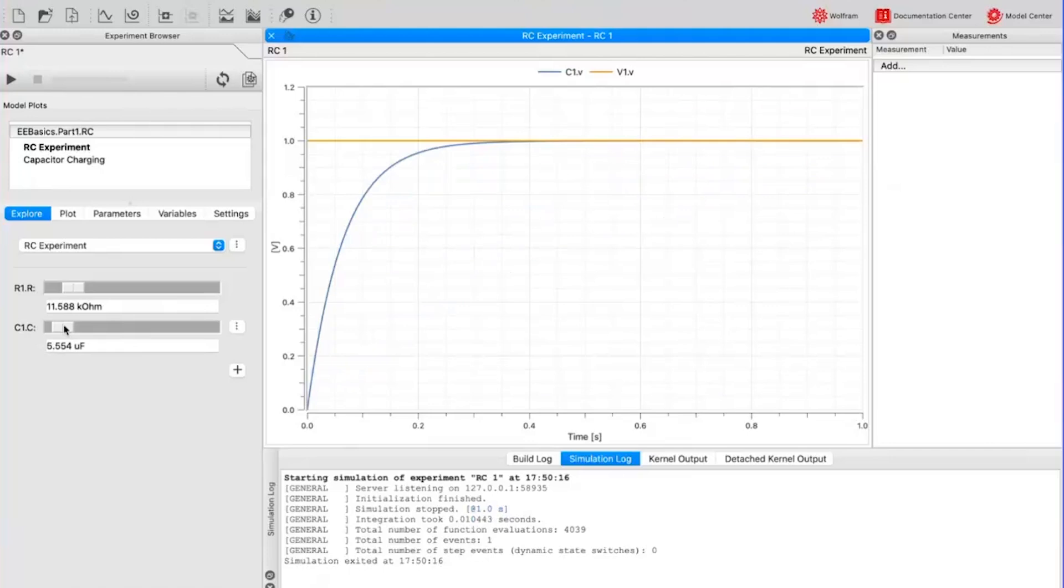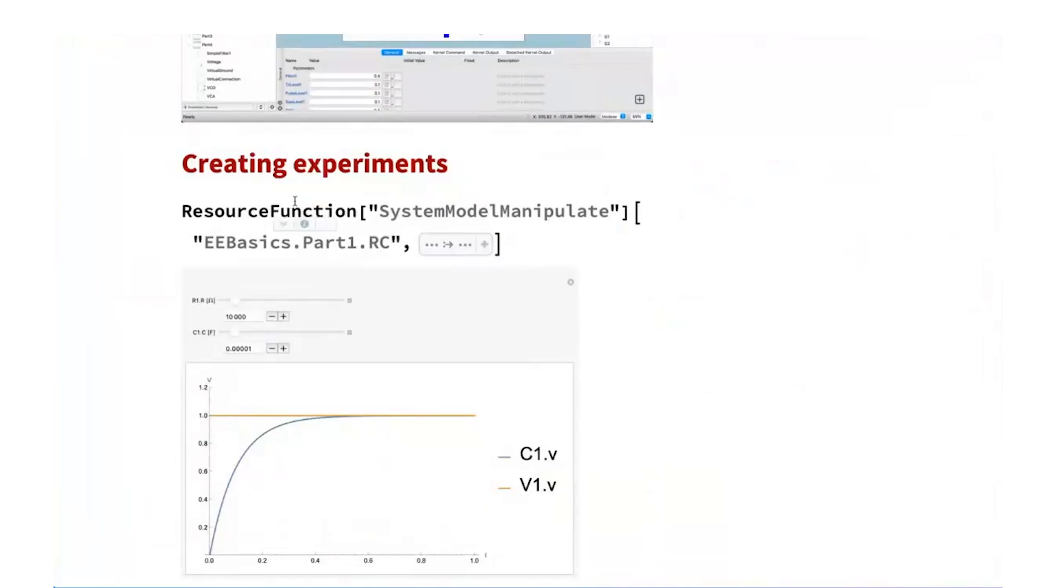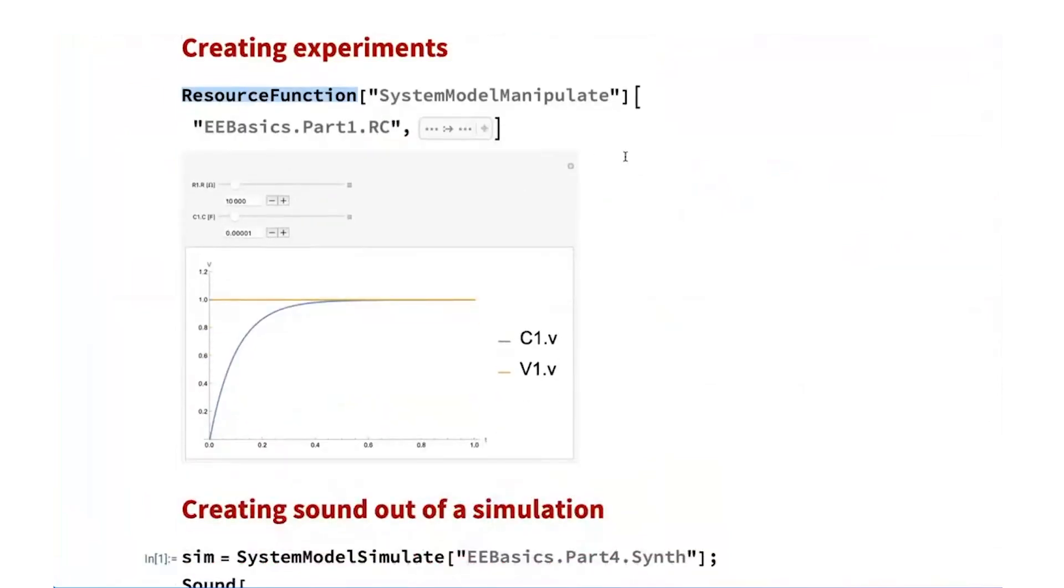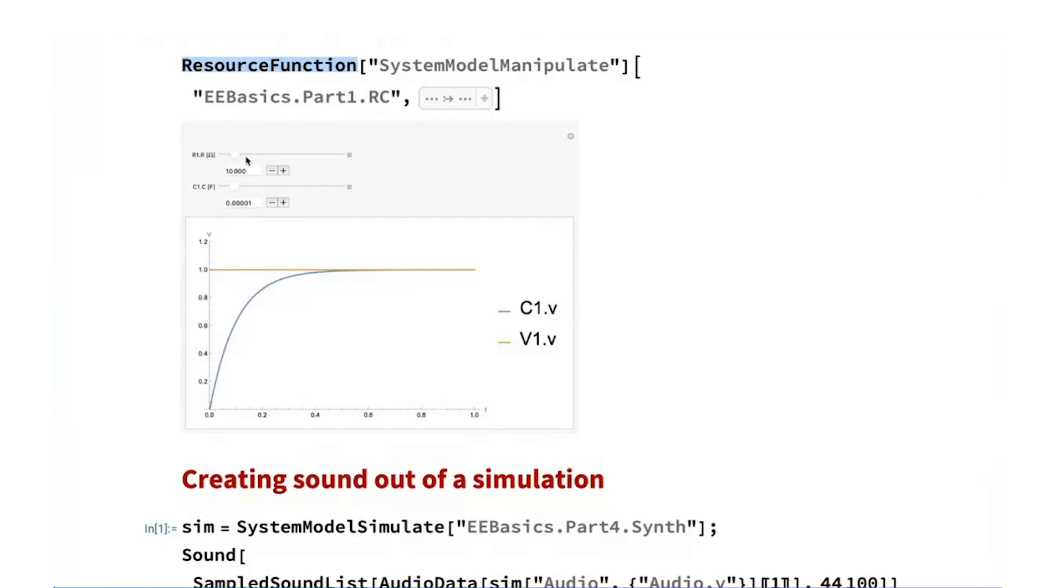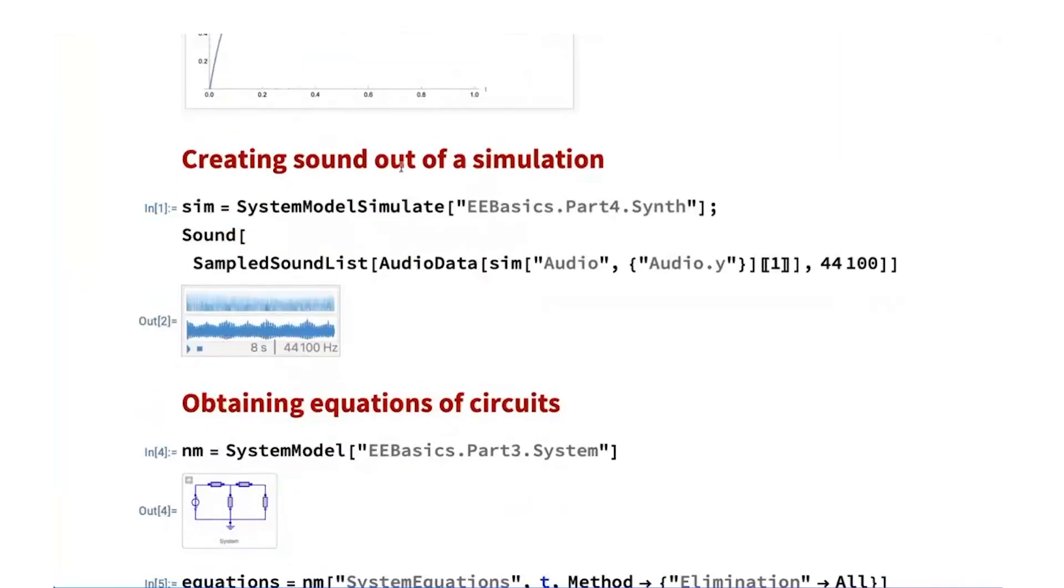For example, if I take this simple circuit which is the one that I show in the previous slide and I simulate it, it is possible to define a plot within System Modeler and also define using these explore panels, sliders that will help us to change the parameters of the components. So I can do exactly what I was doing before, like changing components and see what's the impact on the simulation and starting doing experiments with it.